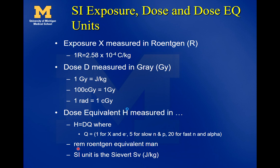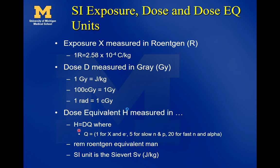We also have the concept of the rem — Roentgen Equivalent Man — a radiation safety dose equivalency that attempts to represent radiation dose in terms relevant to the public. Its SI unit is the sievert. Dose equivalent has SI units of sievert, which is the same unit as dose (joules per kilogram), meaning the quality factor Q is unitless. We multiply the unitless quality factor by the dose to get dose equivalent in sieverts, which is important for radiation safety.